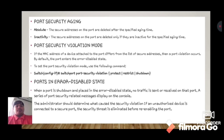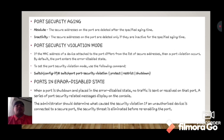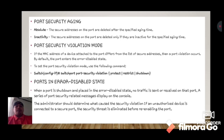To set the port security violation mode, use the command: switch(config-if)# switchport port-security violation. When a port is shut down and placed in the error-disabled state, no traffic is sent or received on the port. A series of port security related messages are displayed on the console. The administrator should determine what caused the security violation. If an unauthorized device is connected to a secure port, the security threat must be eliminated before enabling the port.